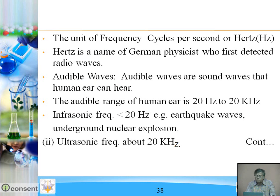The unit of frequency is cycles per second or hertz. Hertz is the name of a German physicist who first detected radio waves. Audible waves are sound waves that the human ear can hear. The audible range of the human ear is 20 hertz to 20 kilohertz. Infrasonic frequency is less than 20 hertz — examples include earthquake waves and underground nuclear explosions. Ultrasonic frequency is above 20 kilohertz.